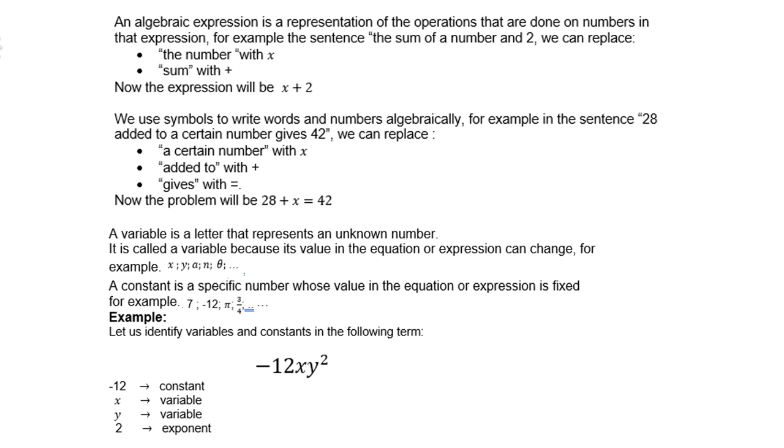Let us identify variables and constants in the following term. The negative 12 is a constant, the x is a variable, the y is a variable, and the 2 is the exponent. Of course, negative 12 can also be called the coefficient.